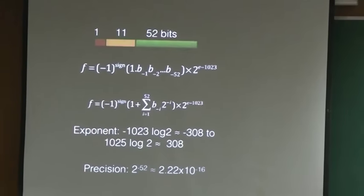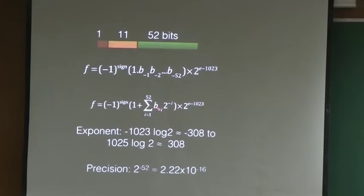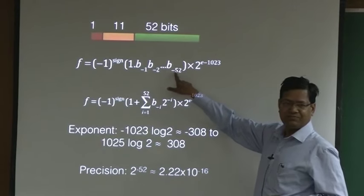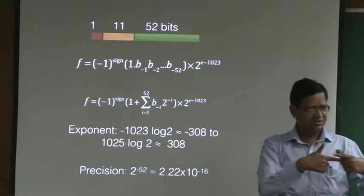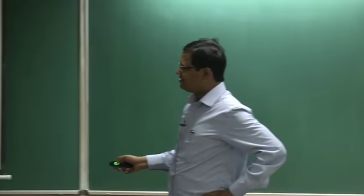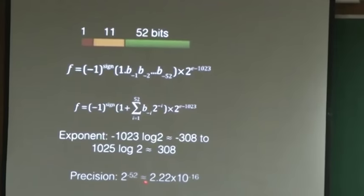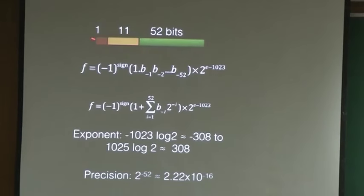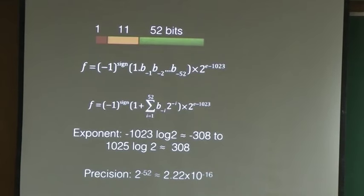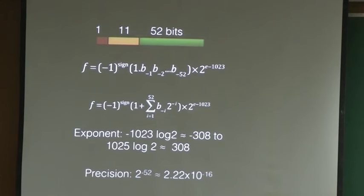The precision: how do I know the precision? The precision will be the difference between two consecutive numbers. When all the bits are zeros except the last bit, the difference between two consecutive numbers is 2 to the power minus 52. That means my precision in decimal is 10 to the power minus 16. So my precision is only 16 digits. Anything beyond that I cannot represent in the computer. If you need more precision, which sometimes people ask for, then you need to code separately.